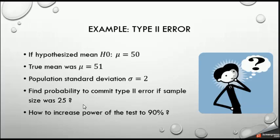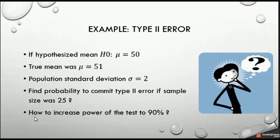To illustrate these relations, consider this example: suppose the null hypothesis is mu equals 50, and the true mean is mu equal to 51. The hypothesized mean is 50. Suppose we know the population standard deviation sigma equals 2. The question is: find the probability of committing a Type 2 error, or beta, if the sample size is 25. We also need to find how much we should increase the sample size so that the power of the test is 90% — which means Type 2 error equals 0.1.